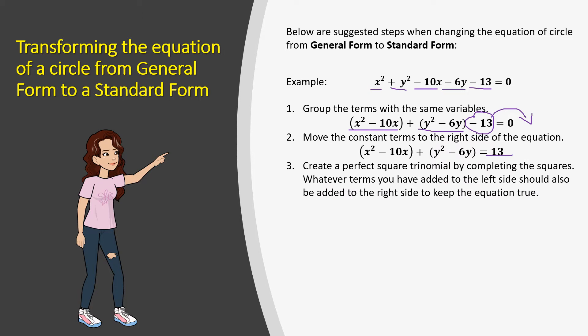Now let's create a perfect square trinomial by completing the square. In the x parentheses, we added 5 squared, and in the y part, we added 3 squared. So whatever you add to the left side, always add to the right side to keep the equation true.